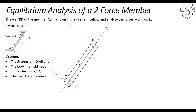Let's take a look at our first example of doing equilibrium analysis on a two-force member. Suppose we have a link connected by two frictionless pins at A and B. We assume that member AB is massless, it's a rigid body, and the system is in equilibrium. We identify the system as just member AB and draw a free body diagram to determine the forces acting upon it.